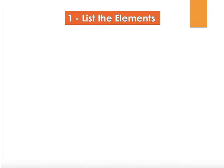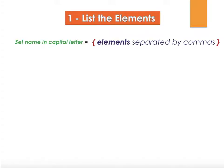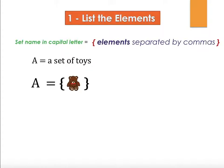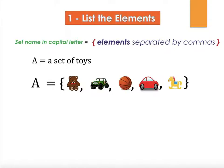Now how do we write sets? There are a couple of ways. The first one is where we list the elements. We write the set name in a capital letter, and then in curly brackets we put the different items — three, four, or five different items. Each of these is actually an element of the set.